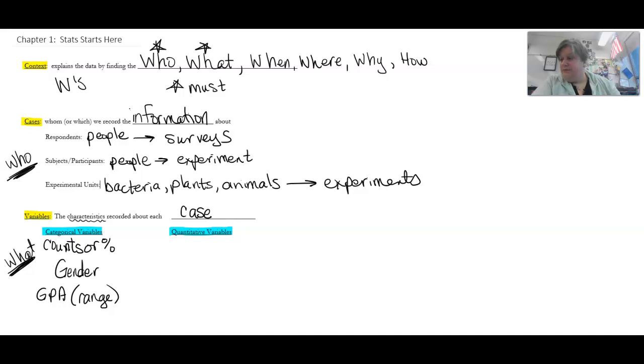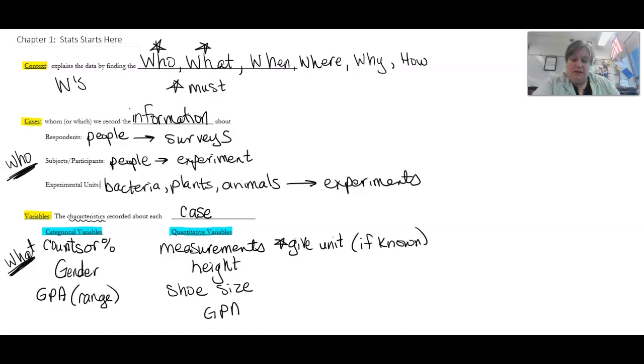All right, so quantitative variables, these are things that are measurements. It is important when you have quantitative variables, you need to explain what the unit is that they're measuring in, if you know it. A lot of times they're going to know it, but sometimes they won't. But if they're talking about something quantitative, so your height, I need to know if you're talking about your height in inches or in centimeters. So, you have to make sure that you say what unit it is. Okay. So, height is an example. Shoe size. GPA, if it's just the number.